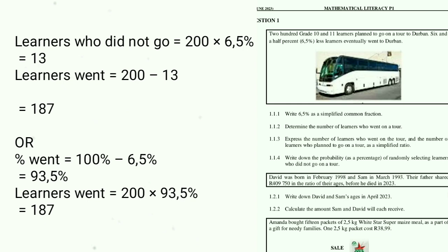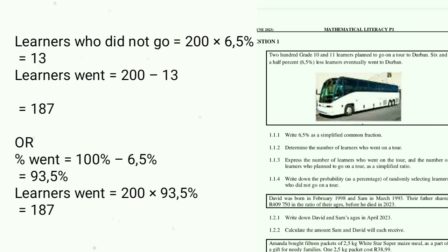Question 1.1.2: Determine the number of learners who went on the tour. Learners who did not go equals 200 multiplied by 6.5%, which equals 13. Remember, 200 Grade 10 and 11 learners planned to go. So learners who did not go is 200 × 6.5% = 13. Then 200 minus 13 equals 187 — those are the learners who went on the tour.